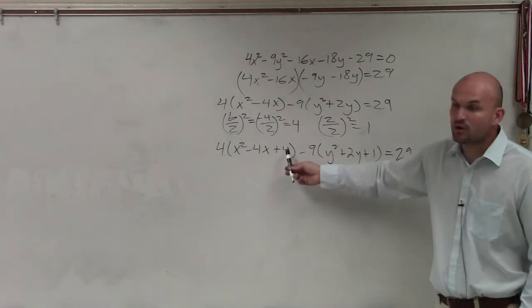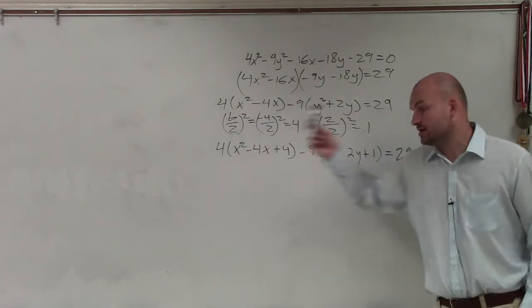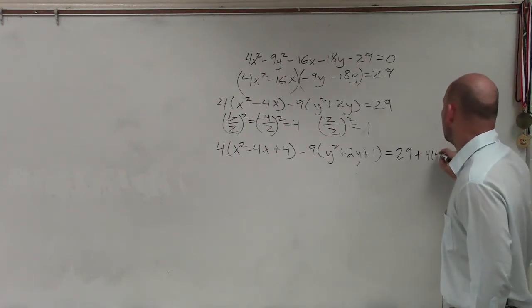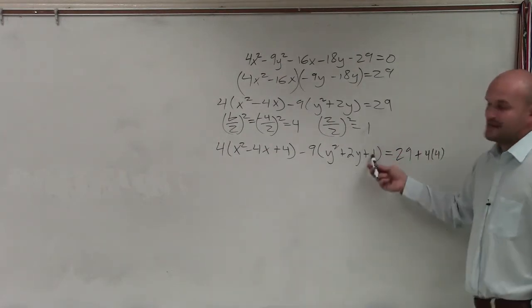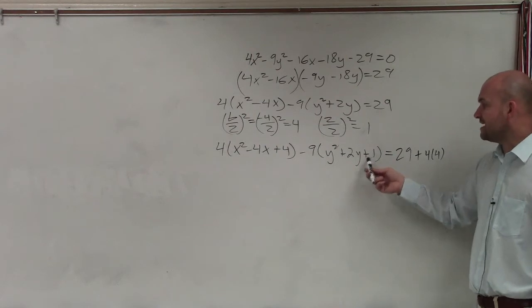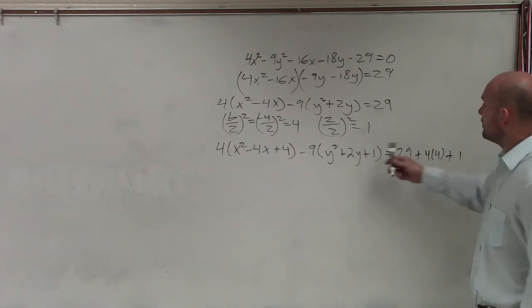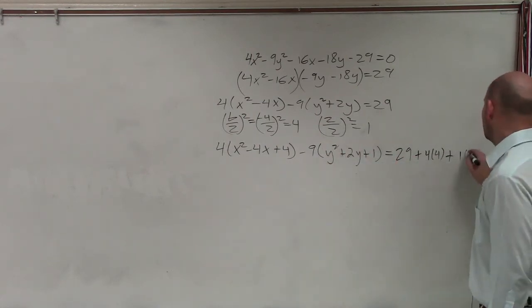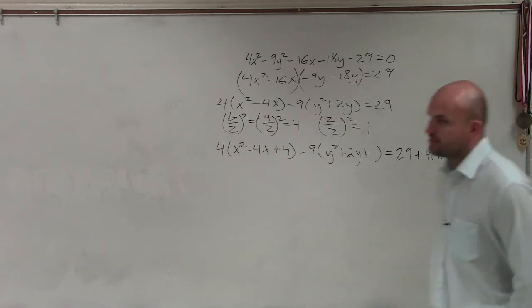But notice, this 4 on the left side is being multiplied by 4. So the 4 on the right side that I add also has to be multiplied by 4. Same thing with the 1. I'm adding 1 on the left side. I need to add a 1 on the right side. But that 1 is being multiplied by negative 9. So this one needs to be multiplied by negative 9, as well.